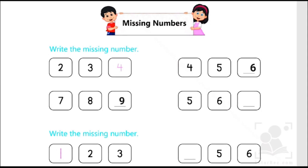Let's move to the next row. 5, 6, and the number is missing. So we have to find out what comes after 6. So let's start counting.